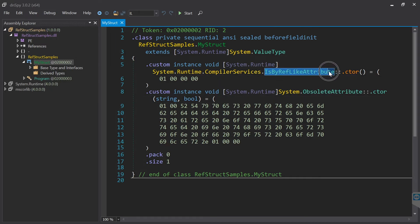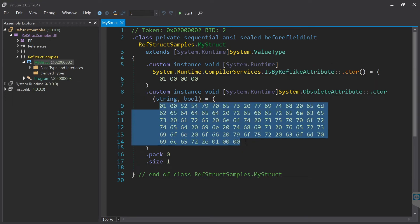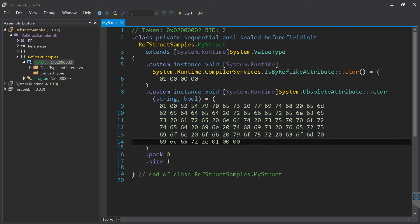So compilers from 7.2 know this IsRefLike attribute and this obsolete attribute with this specific string, and those new compilers ignore this obsolete flag. But older compilers will simply won't enable you to use this type since they treat this obsolete flag really as obsolete. Now honestly I'm not sure that this is a nice solution, but this is how it works.